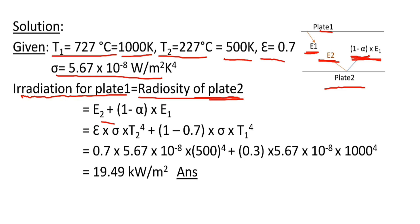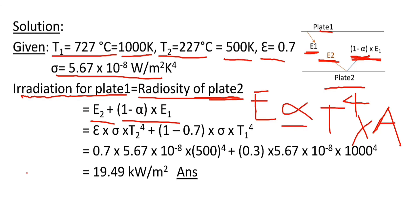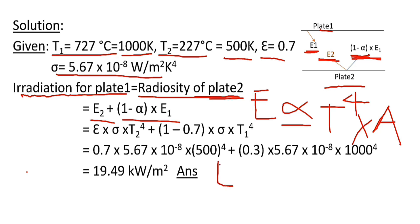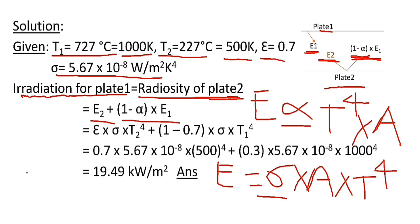So now irradiation for plate 1 is equal to E₂ + (1-α) × E₁. And by Stefan-Boltzmann law, emissive power is directly proportional to 4th power of temperature and cross-sectional area. When this proportional sign is removed, a constant will come here. So emissive power is equal to σ × A × T⁴, and here σ is the Stefan-Boltzmann constant which value is given in the question.